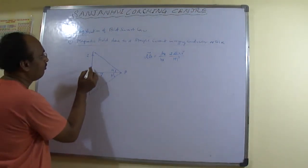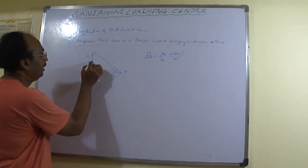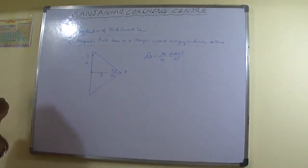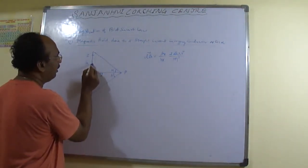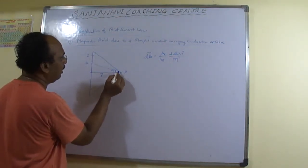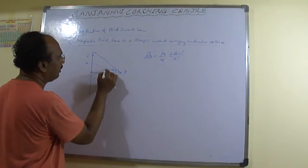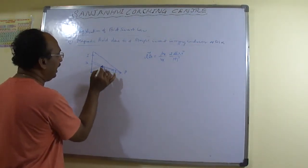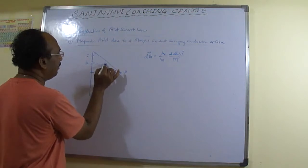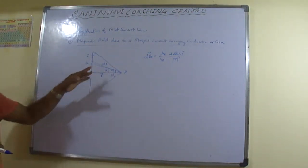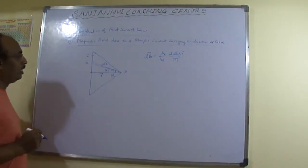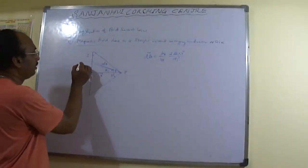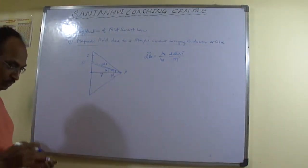Let us take into consideration a small element dL on the wire. This element is at some angle theta from the perpendicular. It subtends a small angle dθ at point B. So the small element can be represented as dL.